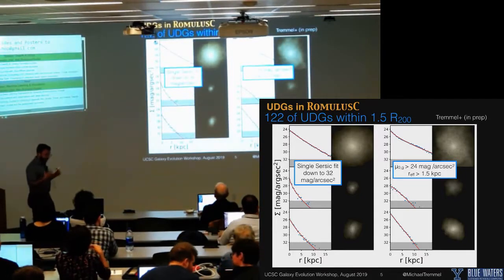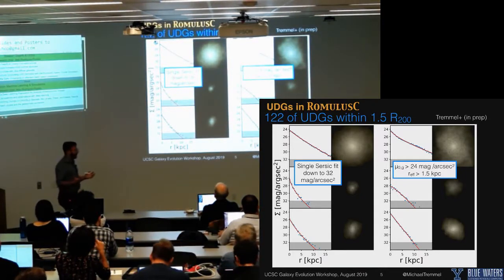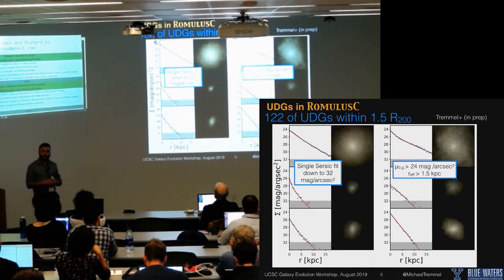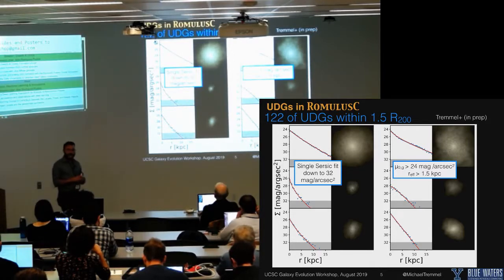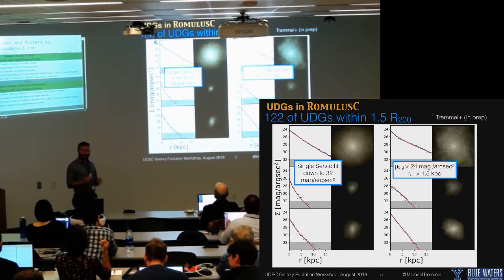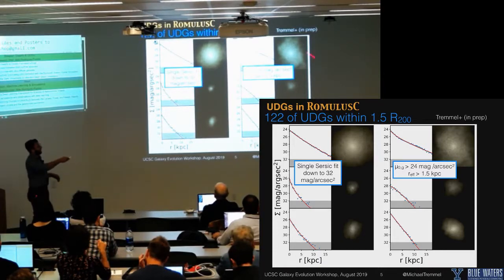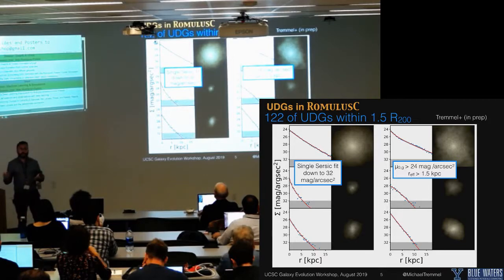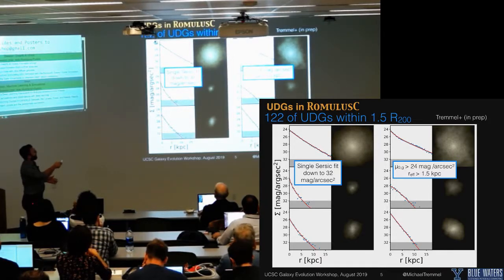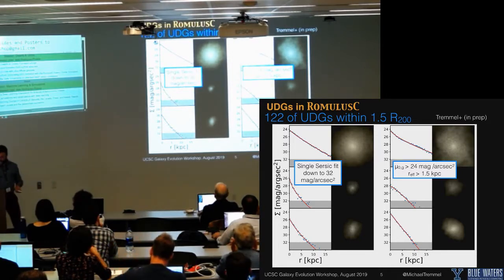We take the simulation at redshift zero and fit single-Sersic profiles to all of our galaxies. We then pick out those with particularly low central surface brightness and particularly large effective radii — these are our UDG population. In total, within 1.5 R200 of the cluster, we find 122 of these galaxies.